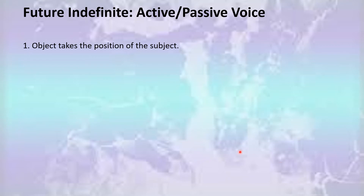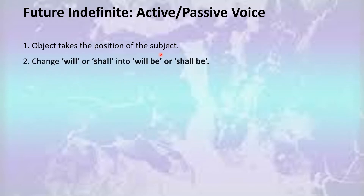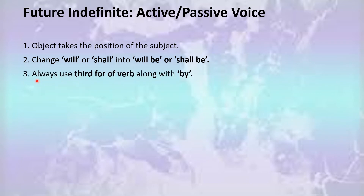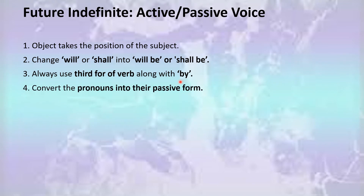You have to follow certain rules to convert an active voice sentence of future indefinite tense into its passive voice form. Rule one: the object takes the position of the subject. Rule two: change 'will' or 'shall' into 'will be' or 'shall be'. Rule three: always use the third form of the verb along with 'by'. Rule four: convert the pronouns into their passive form.